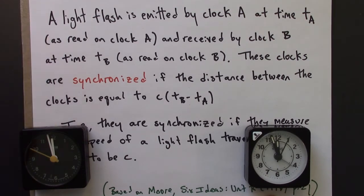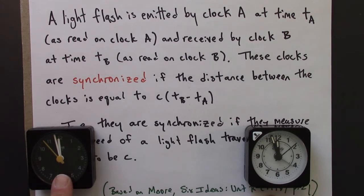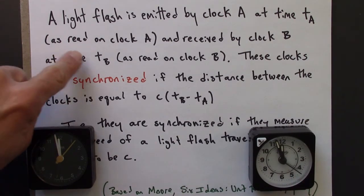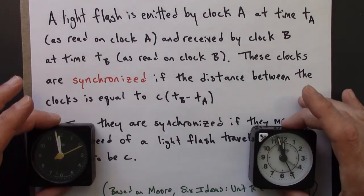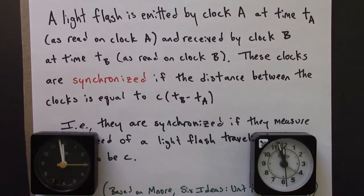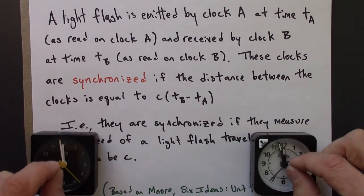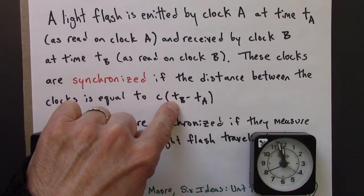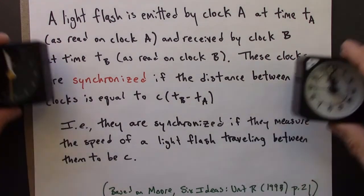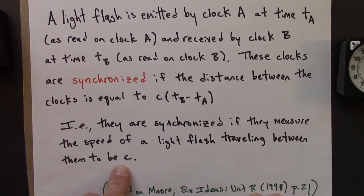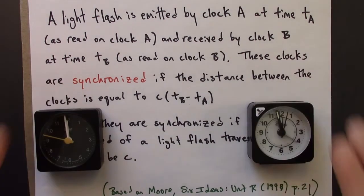A light flash is emitted by clock A at time TA. Clock B receives this light flash at a later time TB as read on clock B. Both clocks are in the same inertial reference frame. These two clocks will be synchronized if the distance between them equals the distance that light would travel in the time interval TB minus TA — in other words, if they measure the speed of a light flash traveling between them to be c. This requirement gives us a way of synchronizing clocks at different locations in a reference frame.